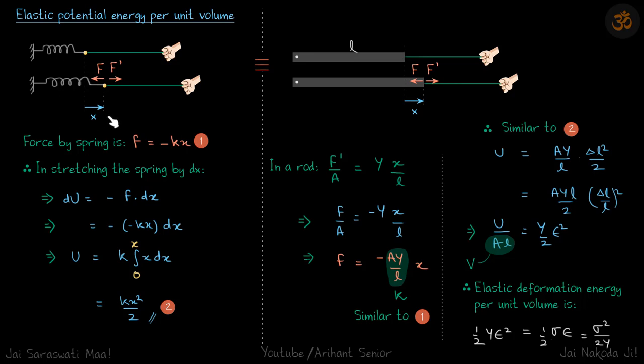If this is the natural length, this point has moved by distance x. It is the property of the spring that force is proportional to x. So in this case, F is equal to minus kx. Now this is the force exerted by the spring. In stretching the spring by dx further amount, you can say dU is equal to minus F dot dx.